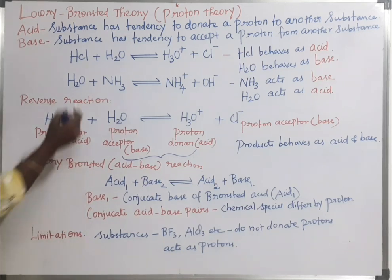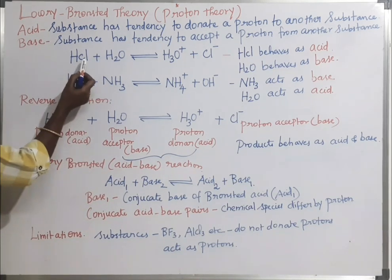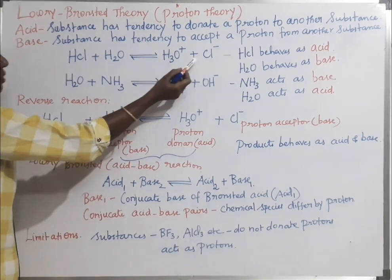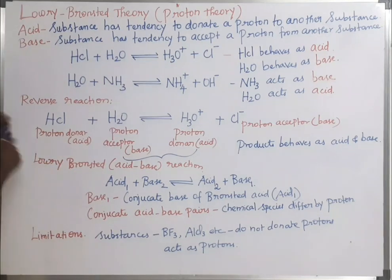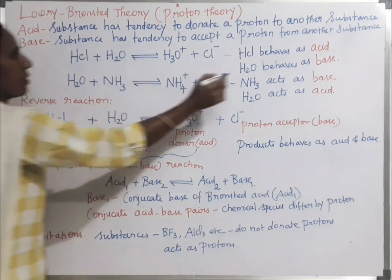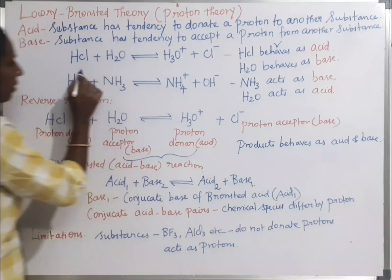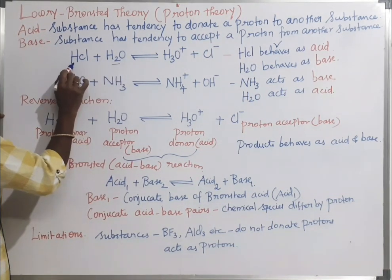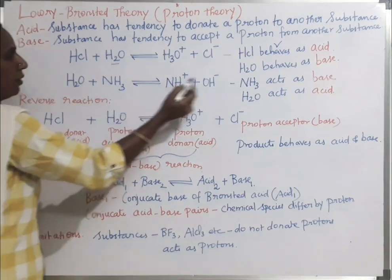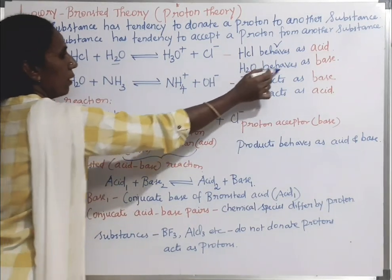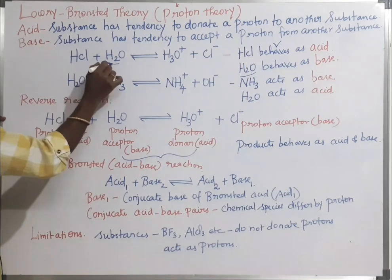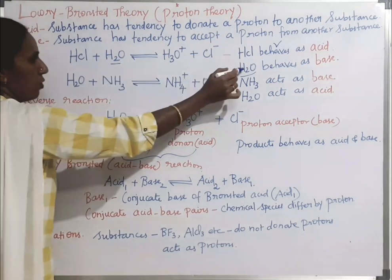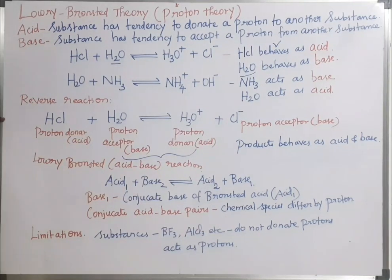Let us see the first reaction: HCl reacts with water to give H₃O⁺ and Cl⁻. Here HCl behaves as the acid because it donates a proton to the water molecule. H₂O behaves as a base because it accepts a proton from HCl.